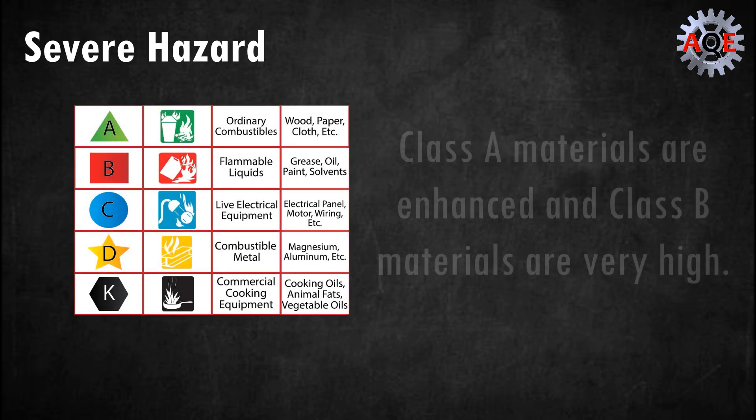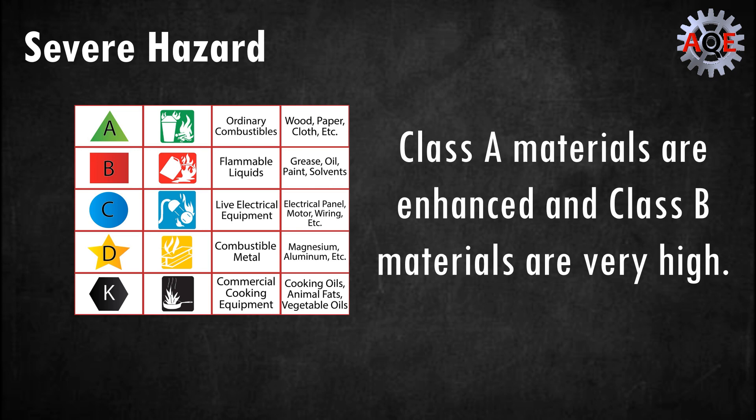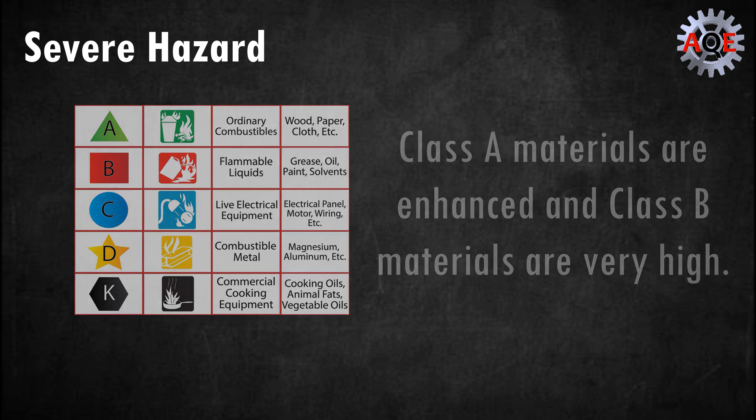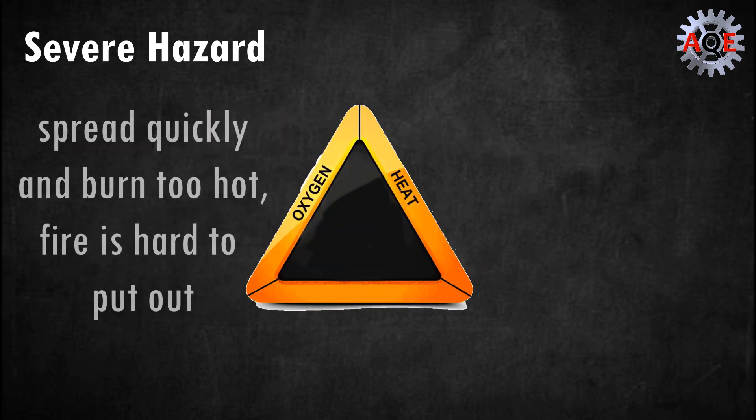Severe hazard. These are locations where the combustibility and quantity of class A combustible material is enhanced. The amount of class B flammables in these locations are also quite high. Any fires that began in these locations would spread quickly and burn incredibly hot, making them difficult to put out.